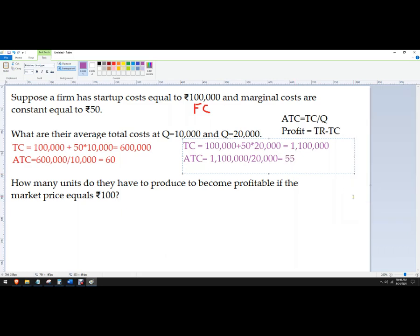So 55. So the average total cost is falling, so I'm experiencing some economies of scale. Good for us.